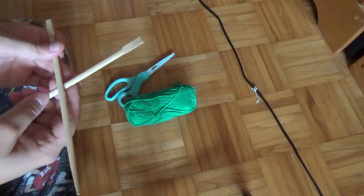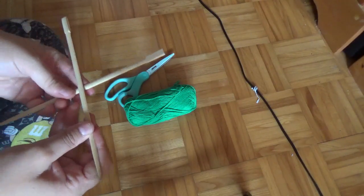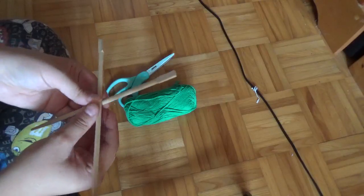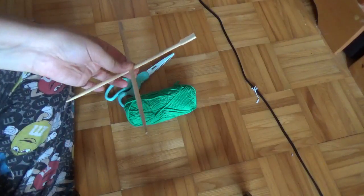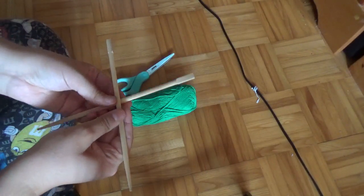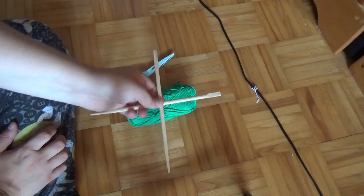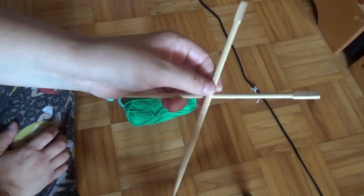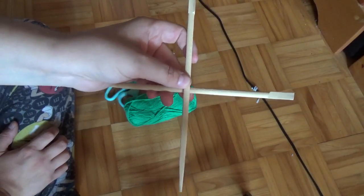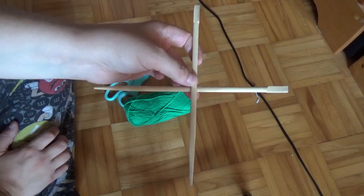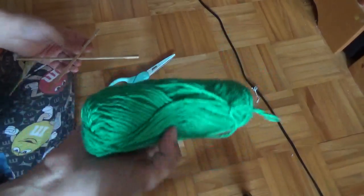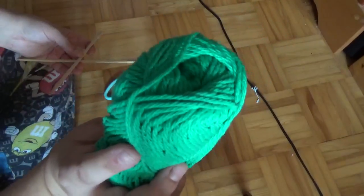So what you're going to do is take your two pieces and make a cross like a plus sign like so, and then you get your choice of yarn.